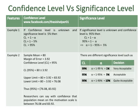Example 1: if the confidence level is unknown and the significance level is 5%, then by putting the value into the formula, we get a confidence level of 95%. If the significance level is unknown and the confidence level is 95%, then by putting the value into the formula, we get a significance level of 5%. Example 2: if sample mean equals 80, margin of error equals 3.92, and confidence level equals 95%, we get a lower limit of 76.08 and an upper limit of 83.92. Researchers can say with confidence that the population mean on the motivation scale is between 76.08 and 83.92.